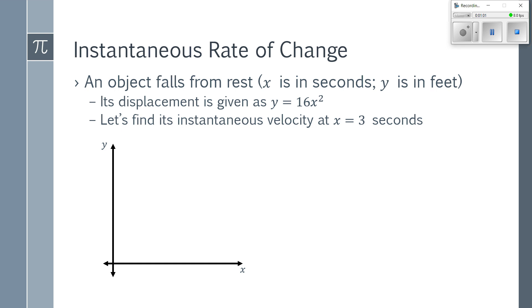Well, the problem here is that for an instantaneous rate of change, I don't have two points. So if I look at the exact same function, an object falling from rest gives me a displacement function of y equals 16x squared, and I graph that. But I want to find the instantaneous velocity at the third second. So, here's 3. I plug that in. 3 squared is 9, 16 times 9 is 144.